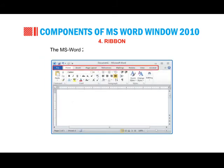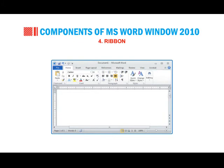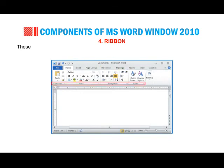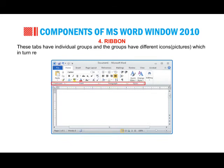Ribbon: MS Word 2010 has a ribbon which contains eight tabs — File, Home, Insert, Page Layout, References, Mailing, Review and View. These tabs have individual groups and the groups have different icons and pictures which in turn represent different commands.